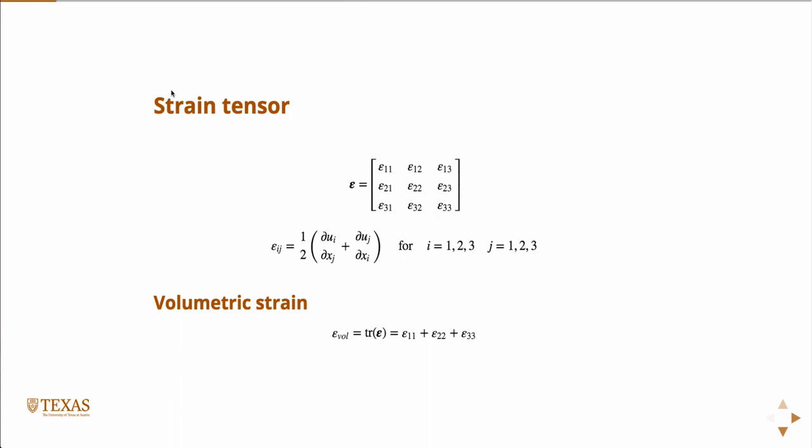So just some definitions. The volumetric strain is the trace of the strain tensor. So the trace is the sum of the diagonals, the sum of the diagonal entries. And we call that the volumetric strain. So this is the total strain that goes into changing the volume of something. So when we talk about volumetric strain, we're talking about if we have our little representative cube of material and we squeeze it, then it deforms into some smaller cube of material. So the difference between the larger cube and the smaller cube, that's the volumetric strain.